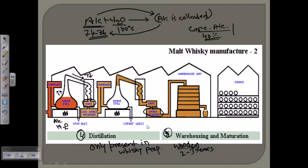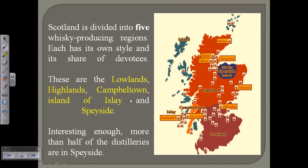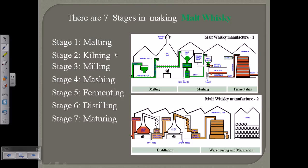Once we age the whisky, the future downstream process involves filling the bottles, labeling them, and then selling. Looking at Scotland, which is a large whisky producing unit, five different whisky-producing regions can be designated: lowland, highland, Campbeltown, the island of Islay, and Speyside. These are the different regions of Scotland which are very important in producing whiskies.